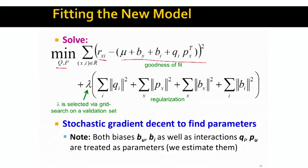What are the things we want to estimate now? We want to estimate b of x, b of i, q of i, and p of x. So now we just added another set of parameters to our models. In some sense, we want to estimate the bias for every user, and we want to also estimate the bias for every movie.